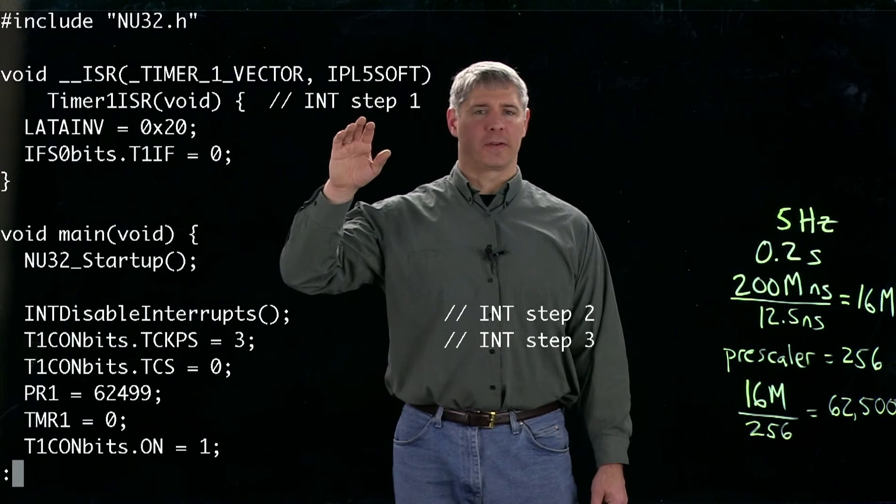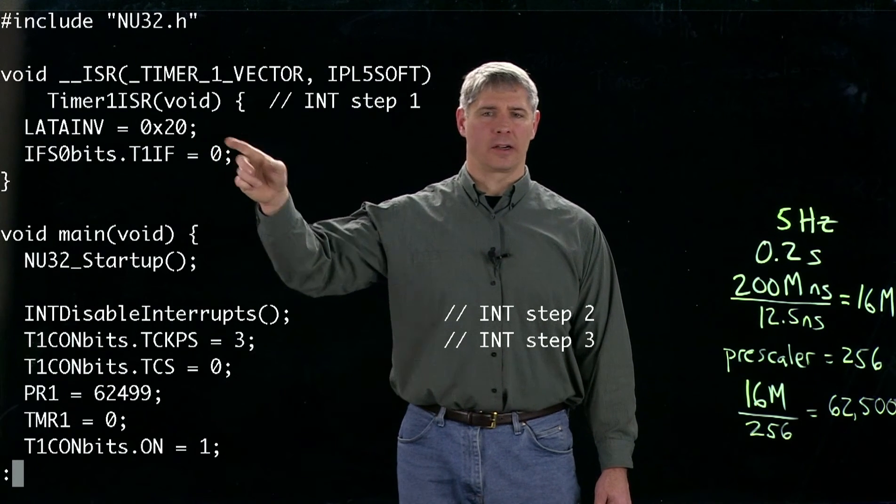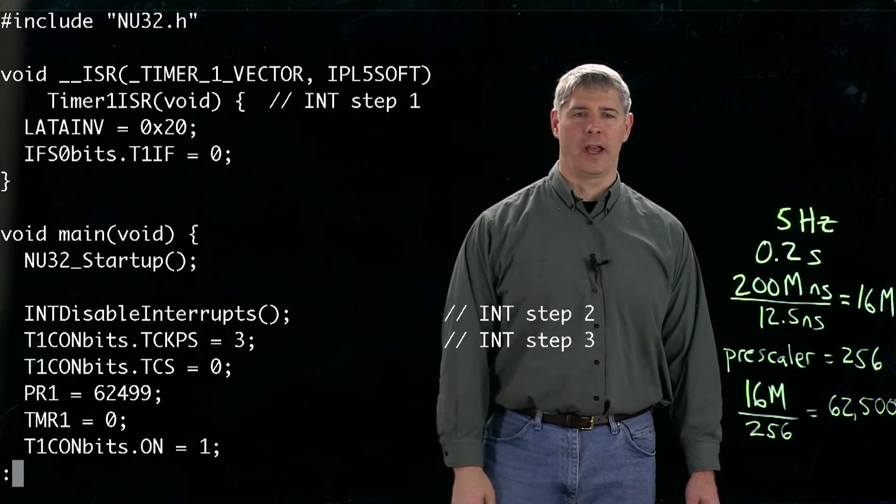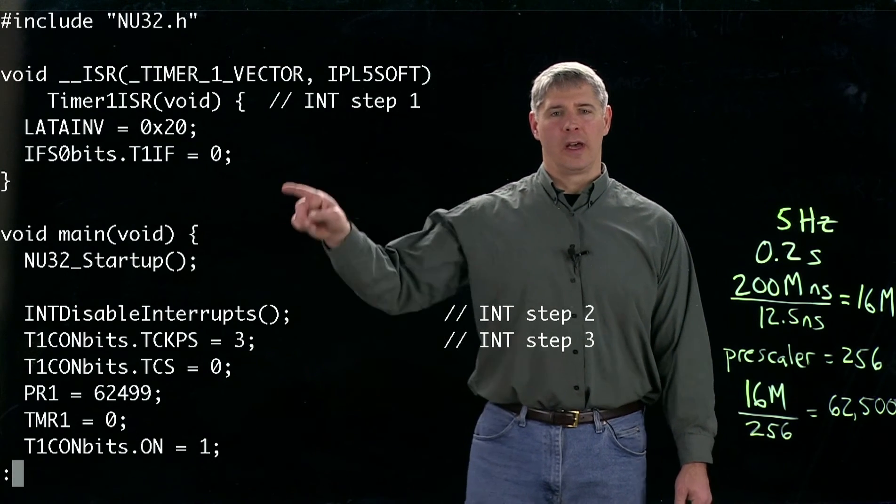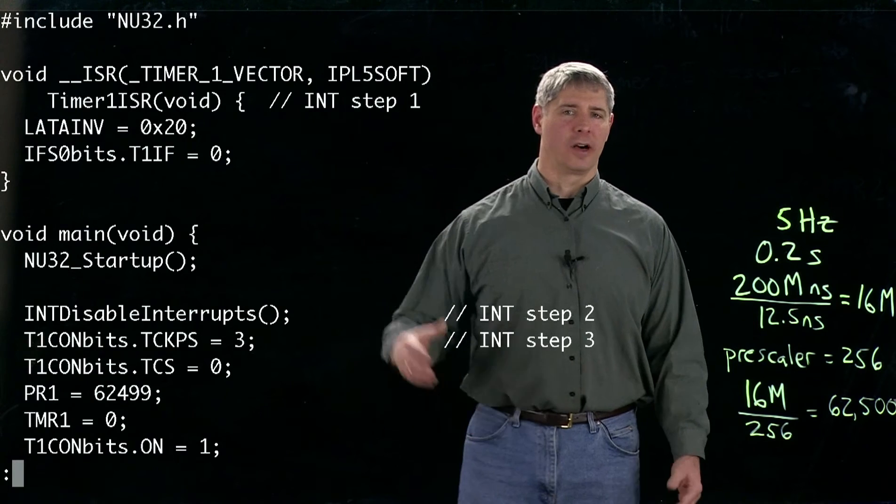we enter this interrupt service routine, all we do is we toggle one of the bits of port A that corresponds to an LED on the NU32, and then we clear the interrupt flag. And that's all the interrupt service